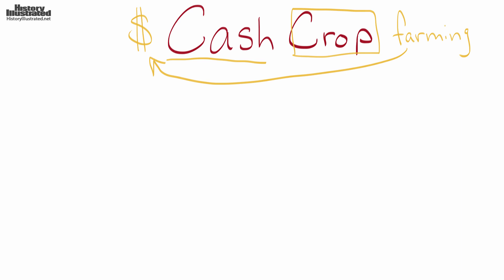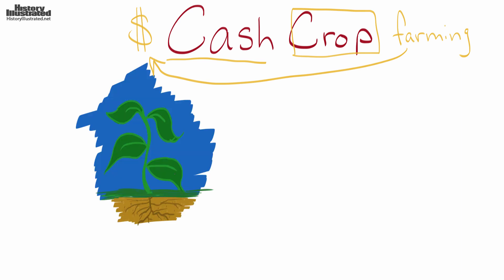Two of the major crops we talk about in American history: the first cash crop is tobacco. It was grown simply to sell — we did not grow tobacco to eat it. It was grown simply to sell for money, which is why we call it a cash crop. It is not grown for food.